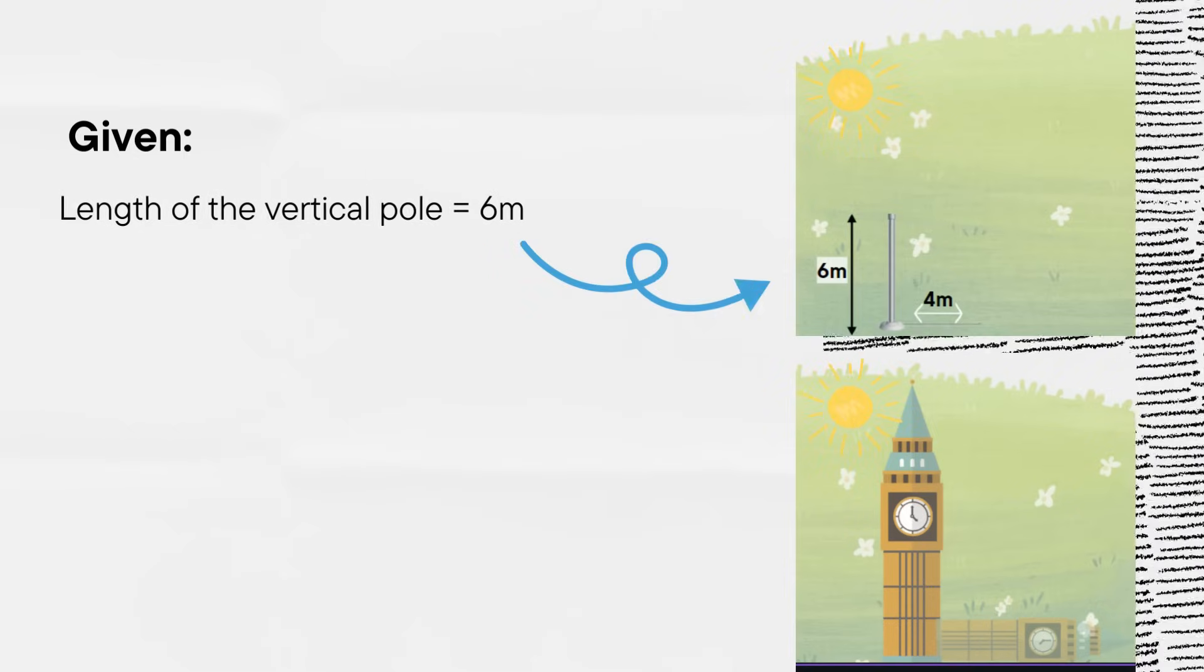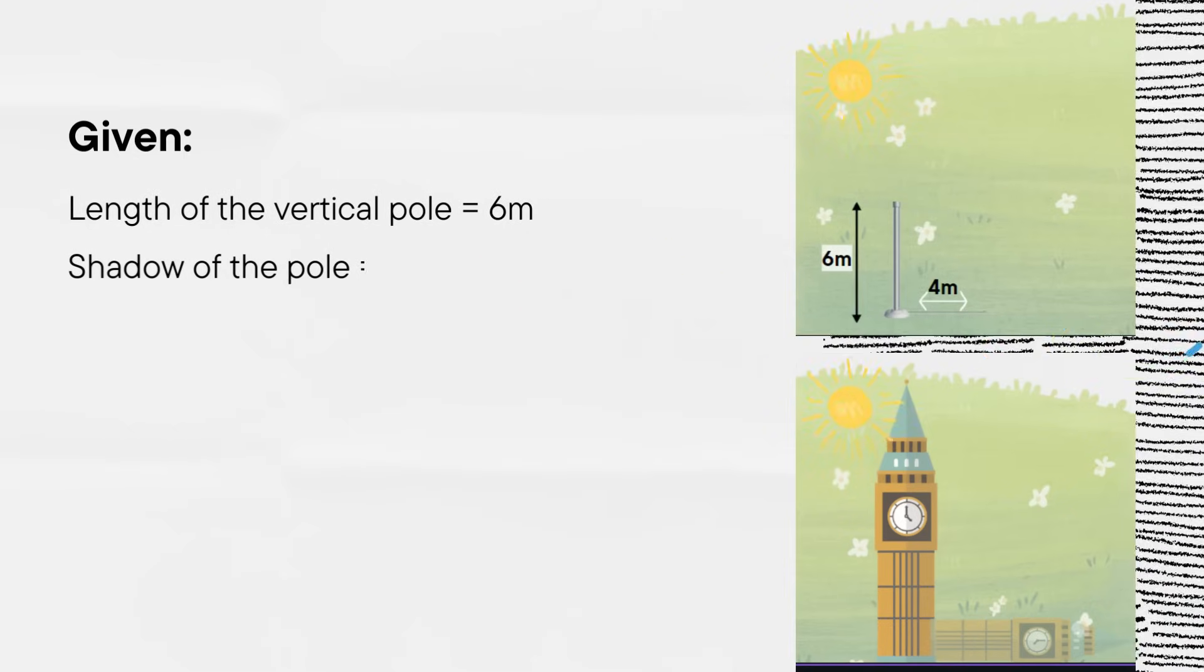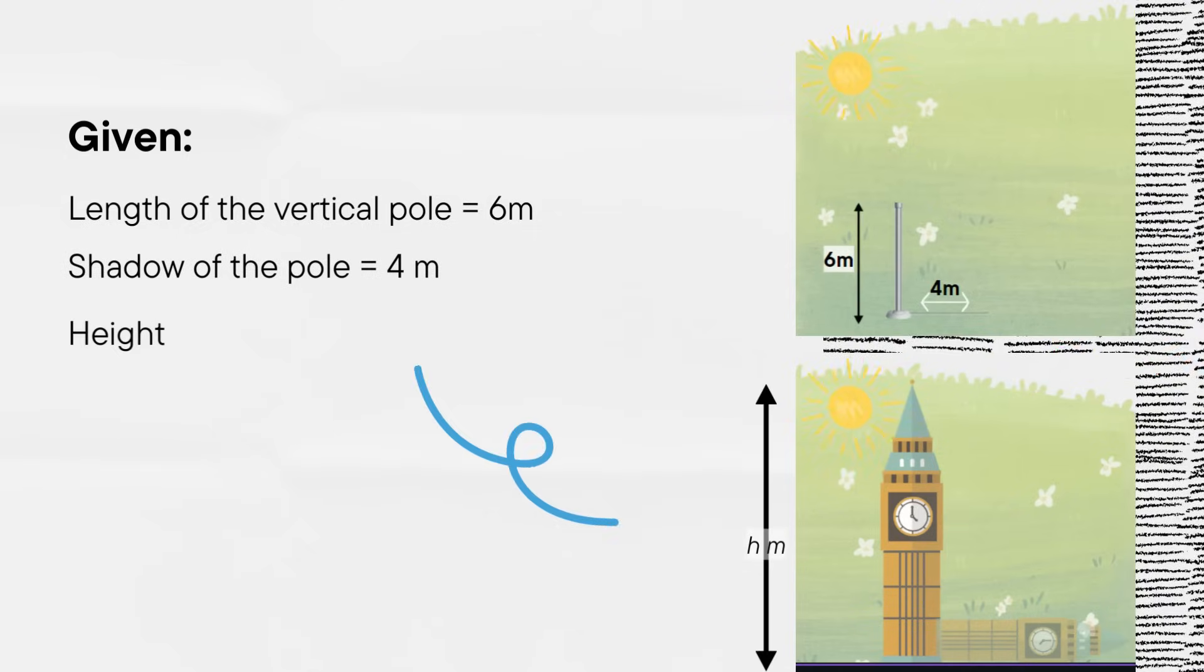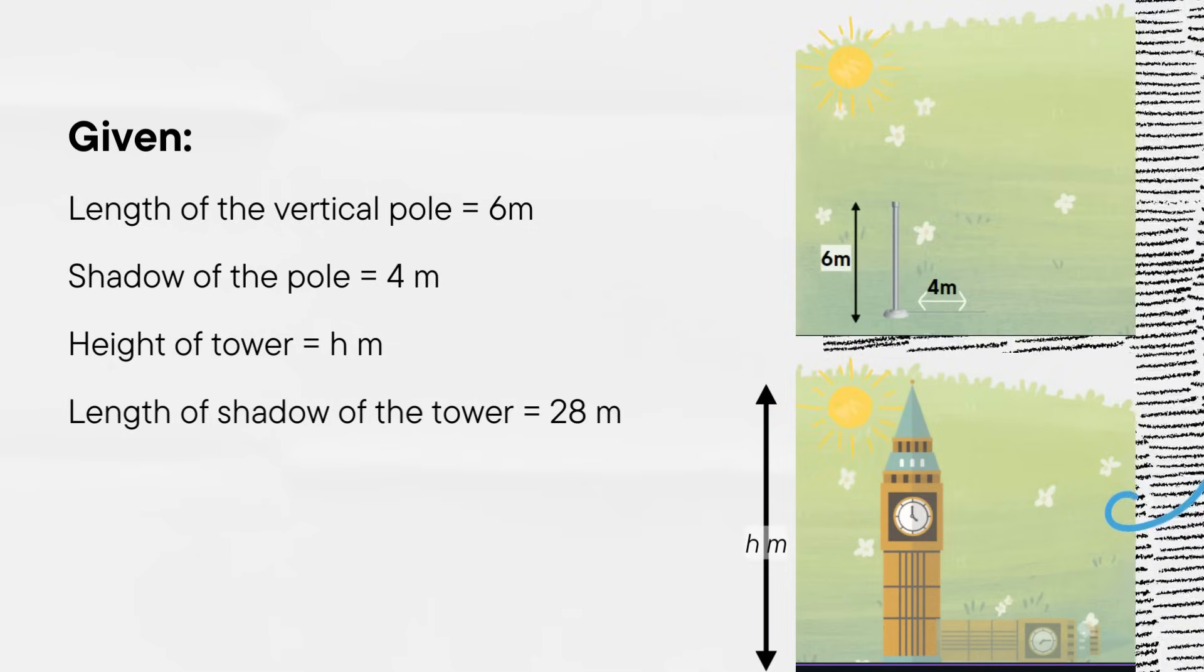We are given that length of the vertical pole is 6 meters, shadow of the pole is 4 meters. Let's assume that the height of the tower is h meters and we are given that length of the shadow is 28 meters.